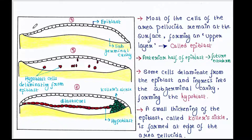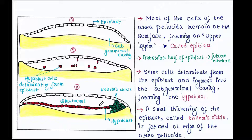The anterior half of the epiblast will form the future ectoderm. Some cells delaminate from the epiblast and ingress into the sub-germinal cavity, forming the hypoblast. Delamination means the formation of a separate layer of cells. So now the hypoblast is formed.